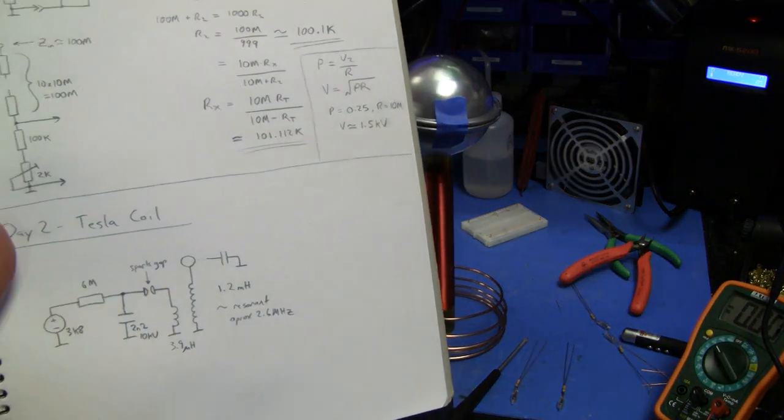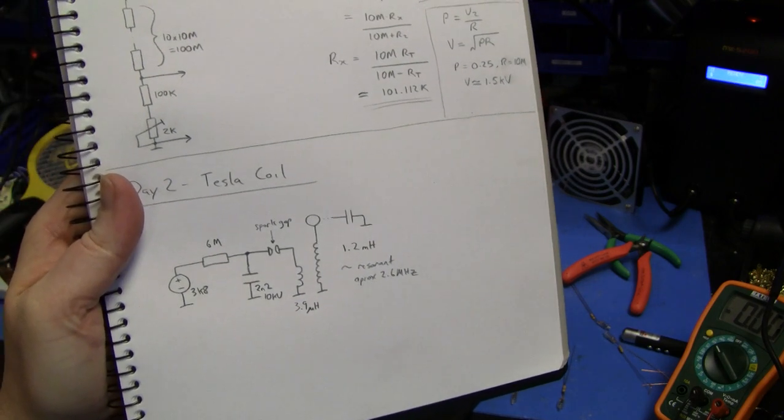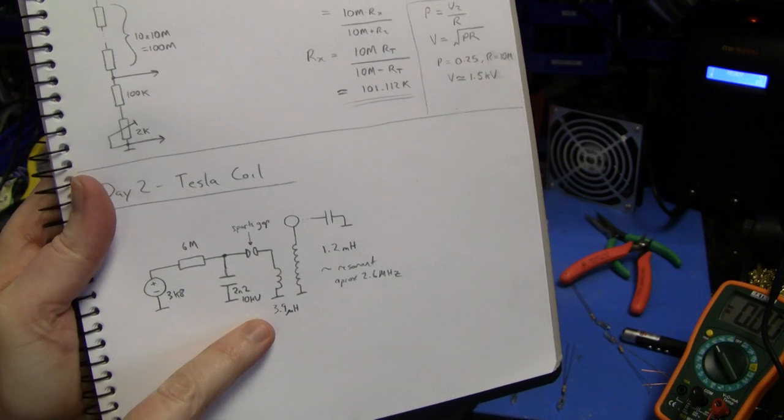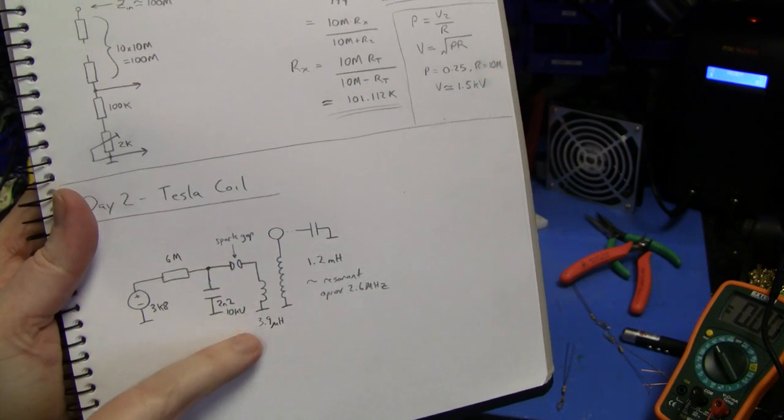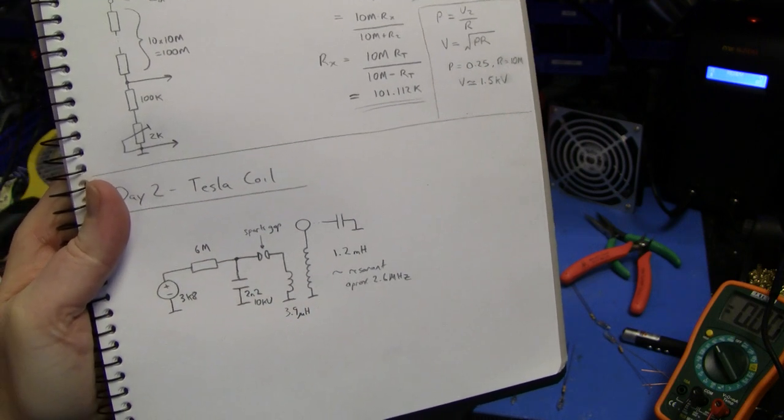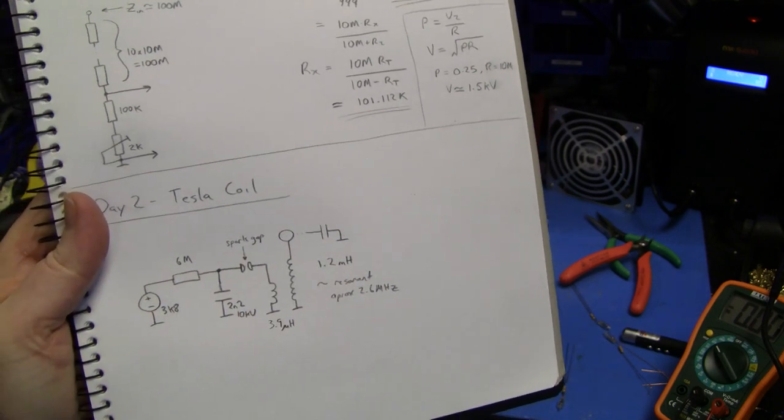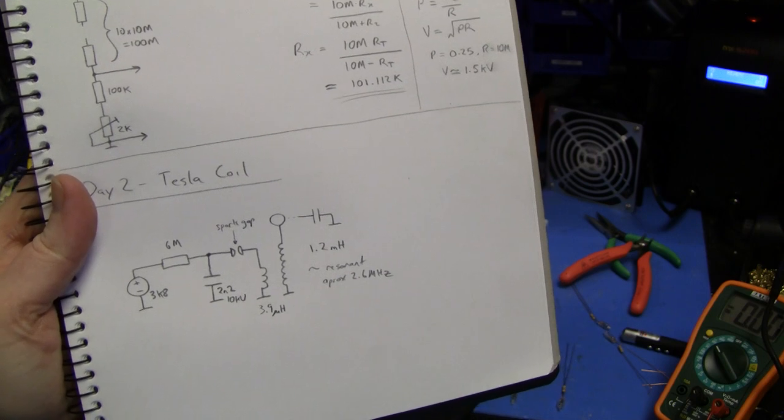It's resonant at about 2.6 megahertz, where ideally it would be resonant where the primary is, which is about 1.7 megahertz. A bit of tuning obviously could bring these closer together and you get better resonant exchange between the two sides. It's about 1.2 millihenries as the secondary.